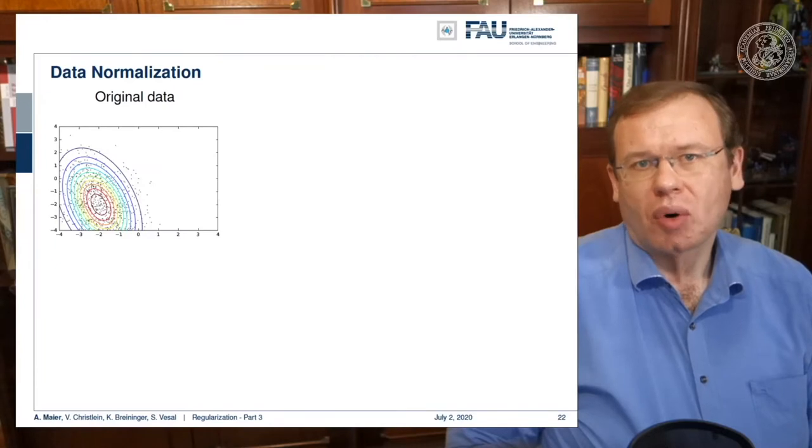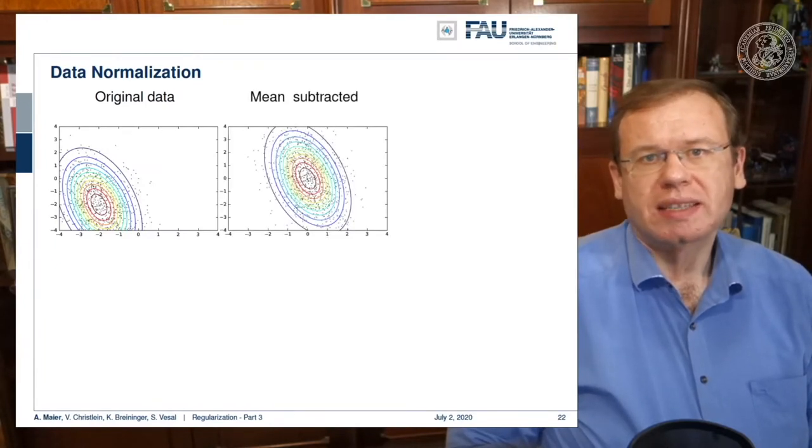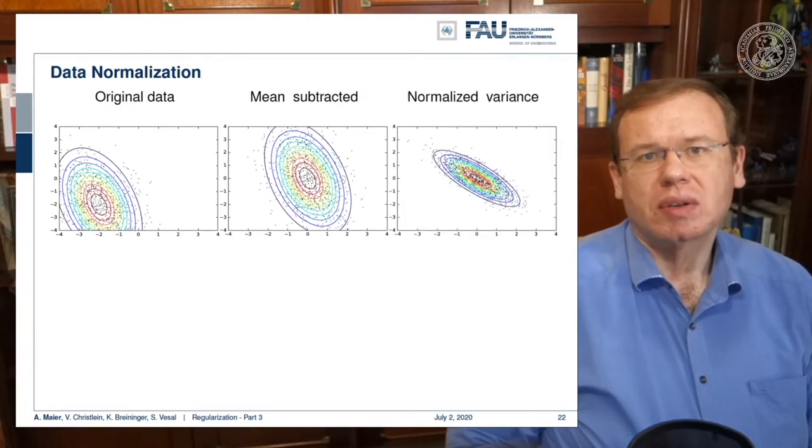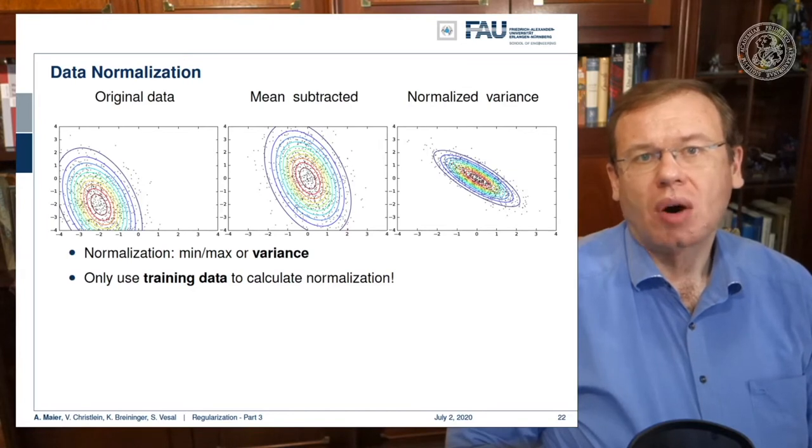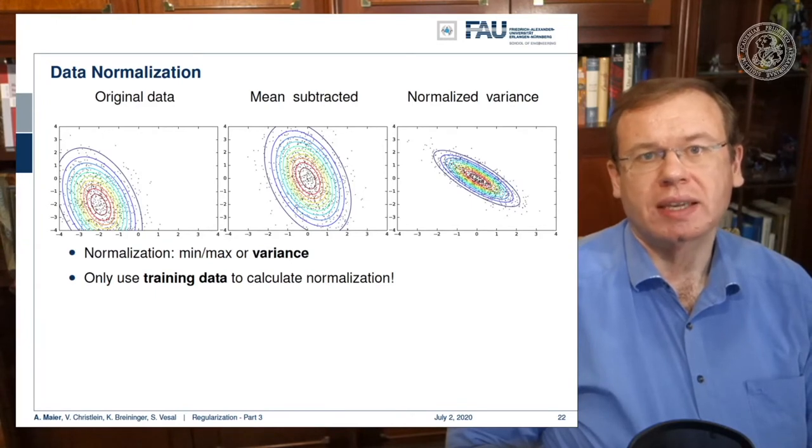Let's look at some original data here. A typical approach is that you subtract the mean and then you also normalize the variance. This is very useful because then we are in an expected range regarding the input. Of course, if you do these normalizations, then you want to estimate them only on the training dataset.